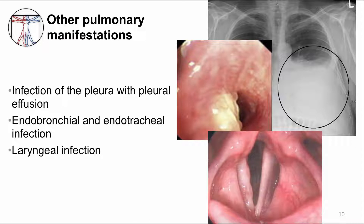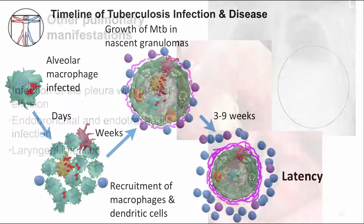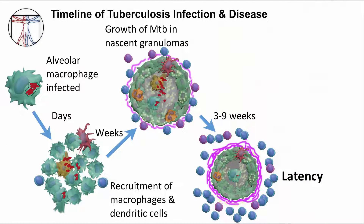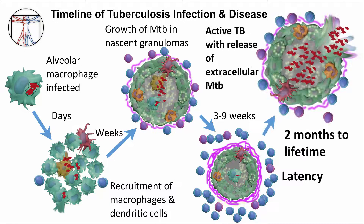I've just described the pathogenesis and clinical manifestations of TB disease, so now let's review the timeline again. We started this part of the discussion during latent TB infection — a phase where MTB may be surviving within the granuloma and the patient is asymptomatic. At some point when the standoff between MTB and the host immune response is disrupted, latent TB infection progresses to active TB disease, which involves actively replicating MTB producing many symptoms in the patient. The time to progression can be very short or very delayed, with a range of two months to a lifetime.